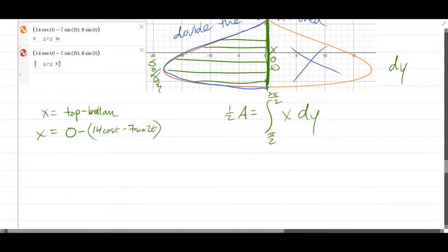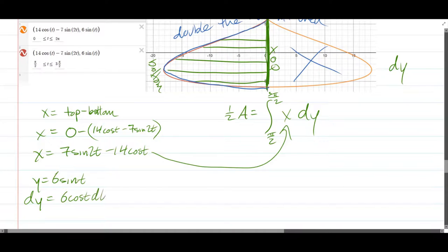I can distribute my negative. So it's negative 14 cos t plus 7 sine 2t. Alright. So that's my x function right there. My regular y is 6 sine t. So dy is the derivative, 6 cos t dt, and that is dy right there. So I'm ready to make these substitutions.